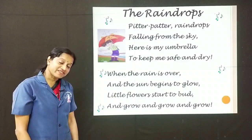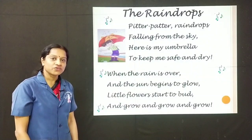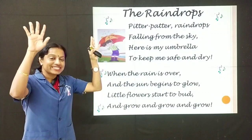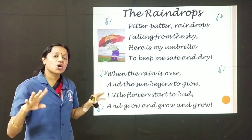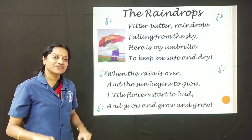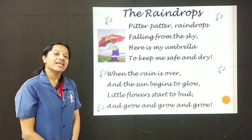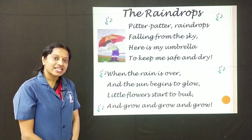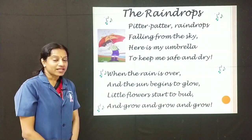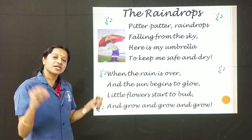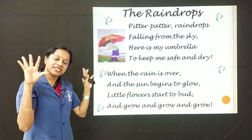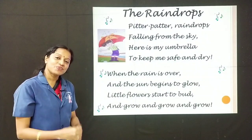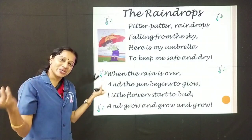Now children, you can sing along with me — The Raindrops. Pitter patter, raindrops falling from the sky. Here is my umbrella to keep me safe and dry. When the rain is over and the sun begins to glow, little flowers start to bud and grow and grow and grow.